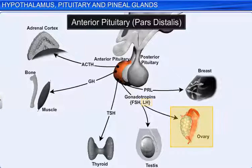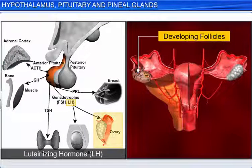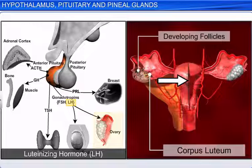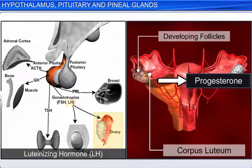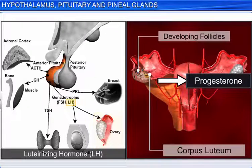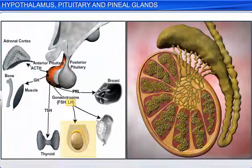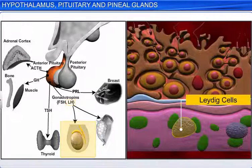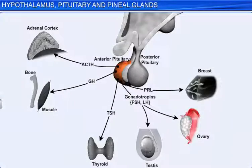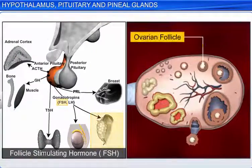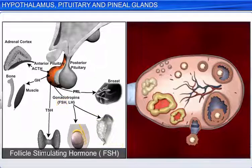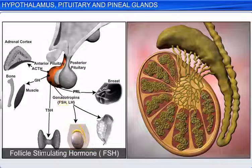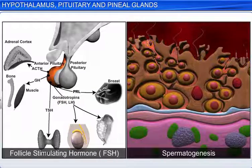In females, LH stimulates ovulation of the Graafian follicles, the formation of the corpus luteum, and the secretion of progesterone by the corpus luteum. Hyposecretion of this hormone leads to sterility in females. In males, LH is known as the interstitial cell stimulating hormone; it stimulates the Leydig cells in the testes to secrete androgens. FSH stimulates the development of several ovarian follicles in the ovaries. In males, FSH and androgens stimulate spermatogenesis in the seminiferous tubules of the testes.